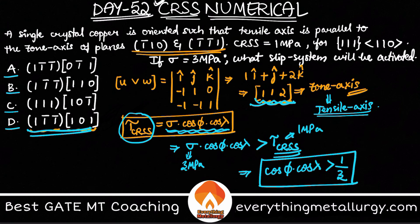Now take all four options and try to verify it. Let's do the fourth option. We have (11̄1̄)[101] and [112]. Cos φ cos θ is h1h2 + k1k2 + l1l2 divided by root of (h1² + k1² + l1²) times root of (h2² + k2² + l2²).